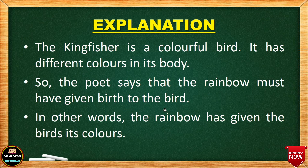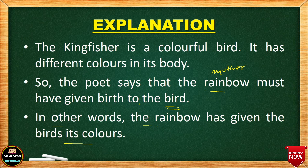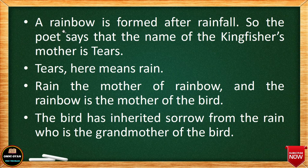The poet says that the rainbow must have given birth to the bird. The rainbow has seven colors and is very beautiful, so the rainbow can be said to be the mother of the Kingfisher. The poet is very sure that the rainbow has definitely given birth to this bird. In other words, the rainbow has given the bird its colors — the qualities of the rainbow, specifically its colors.